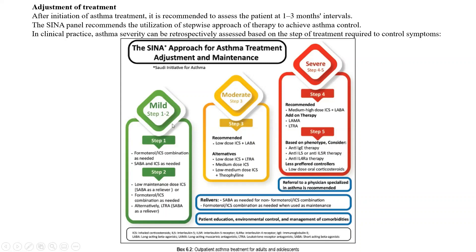Focus on the green, yellow, and red steps. Step one, as previously discussed, is formoterol with inhaled corticosteroid therapy. Step two's recommended option is a daily low-maintenance dose of inhaled corticosteroid with a short-acting beta agonist like salbutamol or albuterol on an as-needed basis, with leukotriene receptor antagonist as an alternative.